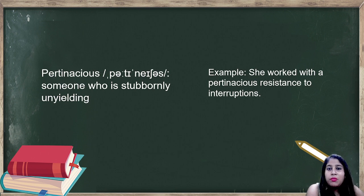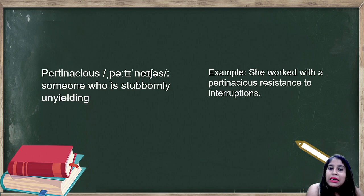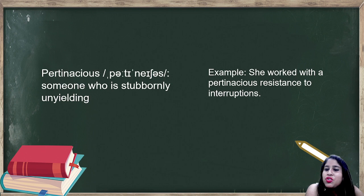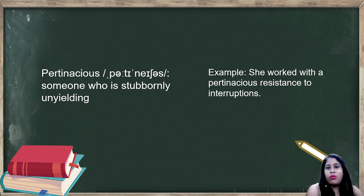The final word is 'pertinacious,' which means someone who is stubbornly unyielding — bhoat zyaada ziddi, adyal, aur kuch yield nahi kar pa raha. Not very productive either. Example: she worked with a pertinacious resistance to interruptions, meaning she was not productive and was very stubborn about not yielding any kind of outcome.